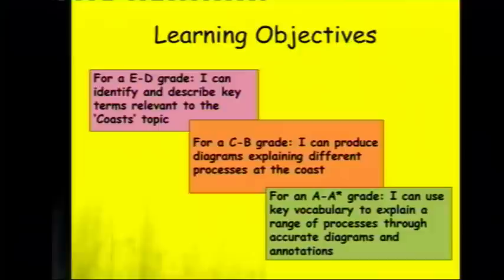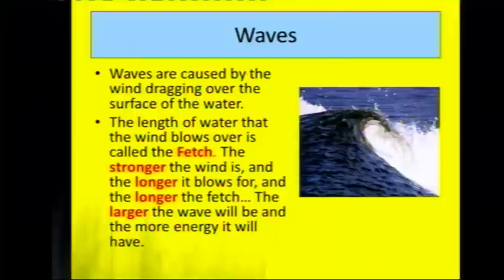This geography revision video is about coastal processes. For an E to D grade you need to be able to identify and describe key terms around the coast topic. For a B to C you need to be able to produce diagrams explaining what's happening. And for an A to A* grade you need to use key vocabulary to explain every single process through annotated diagrams.